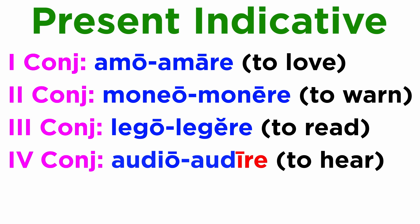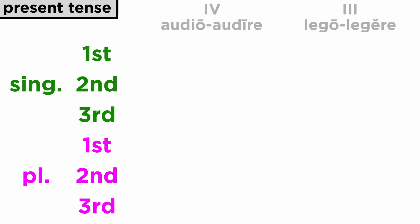The verbs of the fourth conjugation are easily recognizable from their infinitives, which end in -ire. They are very similar to the third conjugation, but in the fourth there is a long vowel I found in the infinitive. Therefore, the I is retained throughout the entire present system, making it rather easy to conjugate. The third conjugation, as you remember, has the infinitive in -ere with a short E, and the short vowels tend to change. As a reminder, it won't hurt to compare a new verb of the fourth with an old verb of the third.